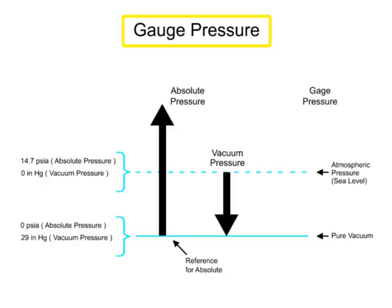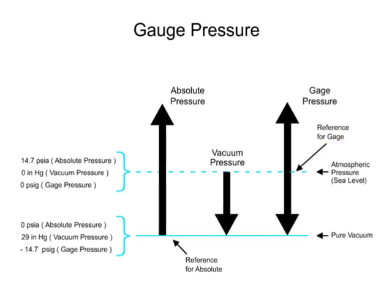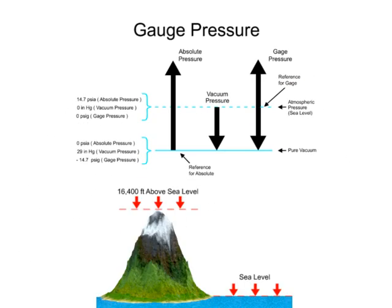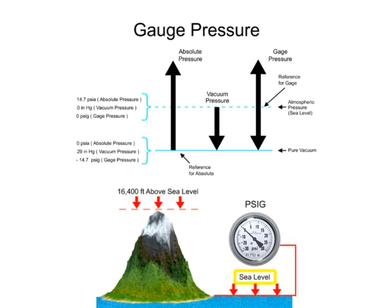The gauge pressure scale uses atmospheric pressure as the reference. The unit of measurement for gauge pressure is pounds per square inch gauge, abbreviated as PSIG. At sea level, the gauge measurement is zero.